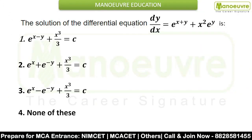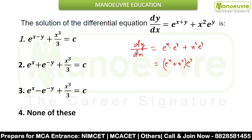We have to find the solution of dy/dx = e^(x+y) + x²·e^y. Here you can separate these values: e^x·e^y + x²·e^y. You can see e^y is common, so taking e^y common gives e^y·(e^x + x²). With dy/dx on the left, when you separate the variables, you get dy/e^y = (e^x + x²) dx.